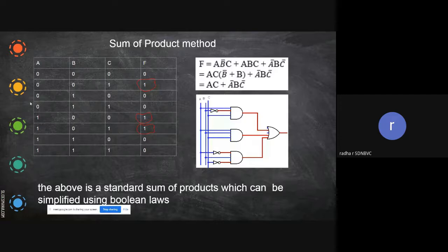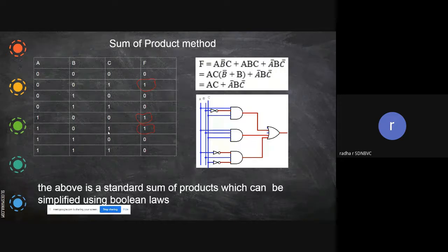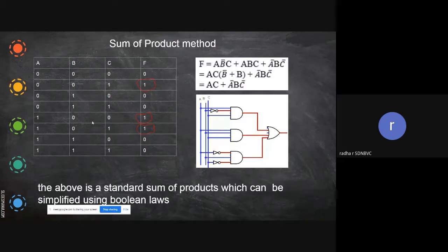So if you see a, b, c — here a is zero, so it is a-bar. You write a-bar, b-bar, and then c. Similarly, here a, b-bar, c-bar and then a, b-bar, c — like that you form the terms. All these things have to be added with the plus symbol. Then you try to reduce the equations with the existing Boolean laws, and then you write the circuit diagram.